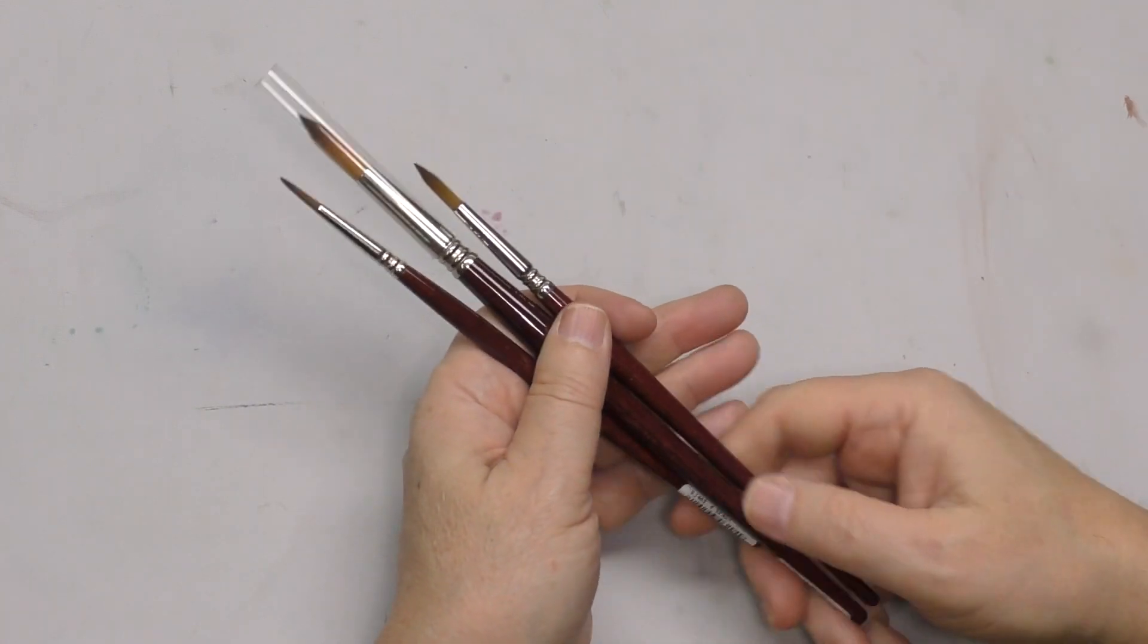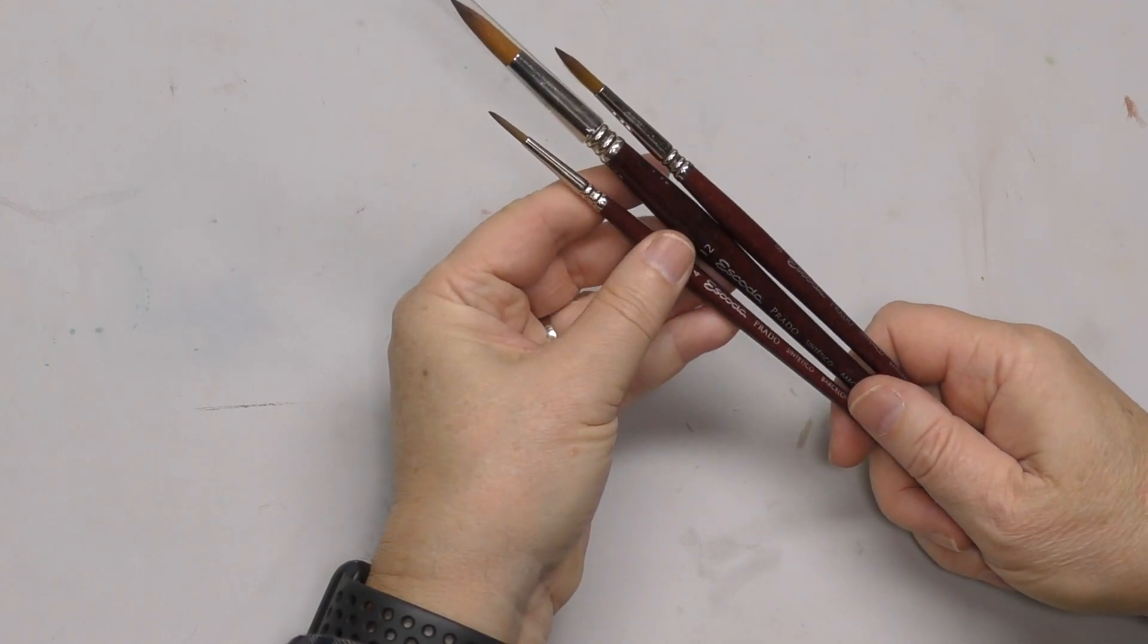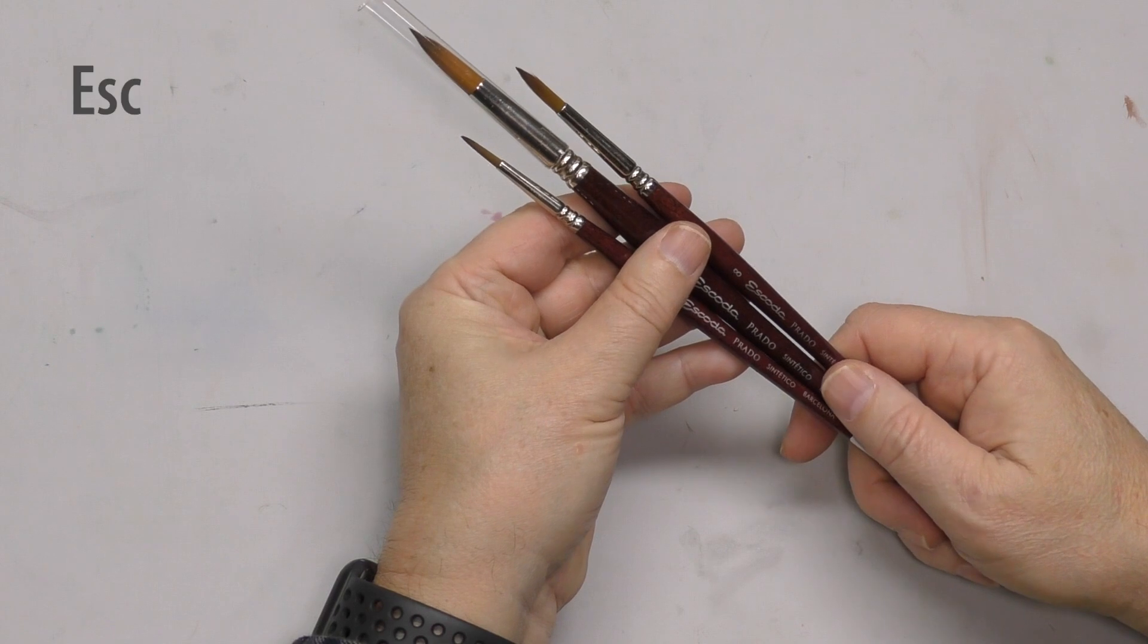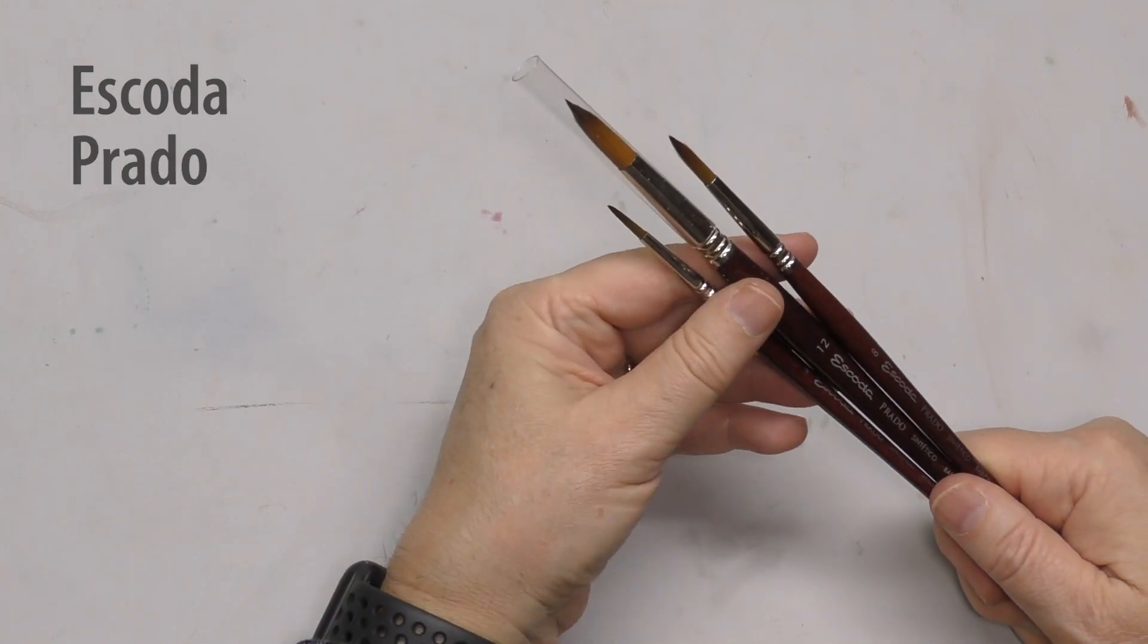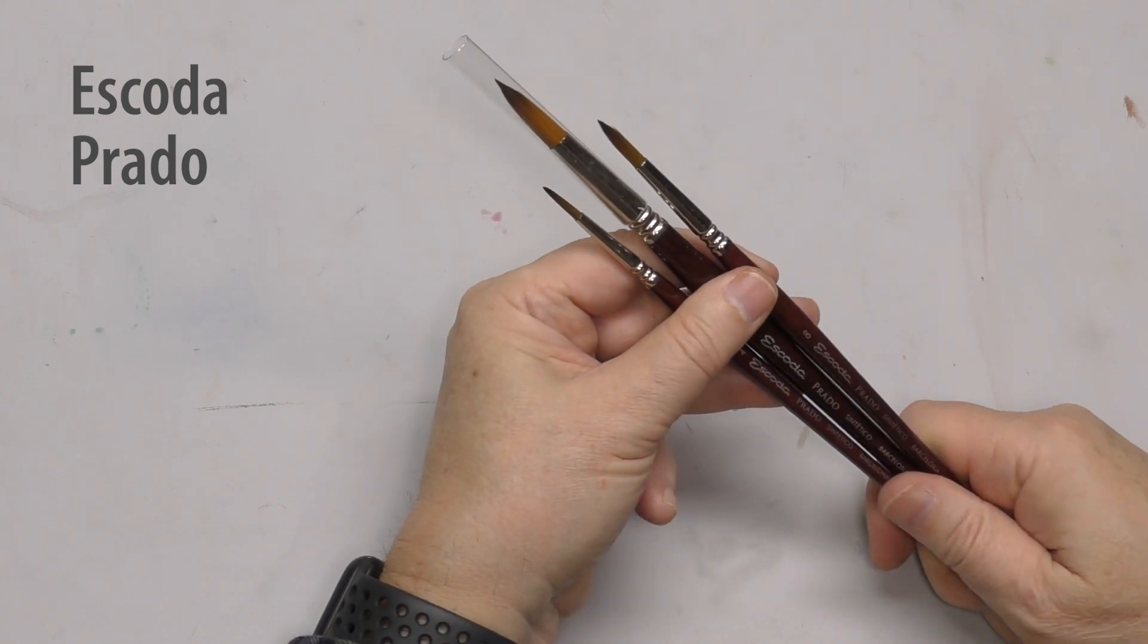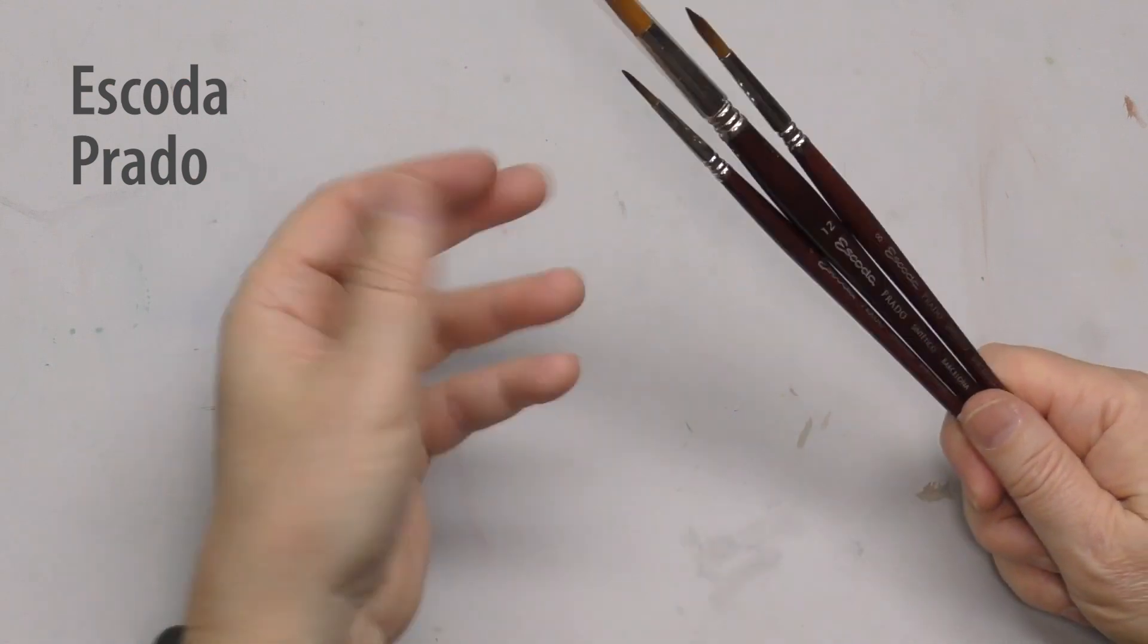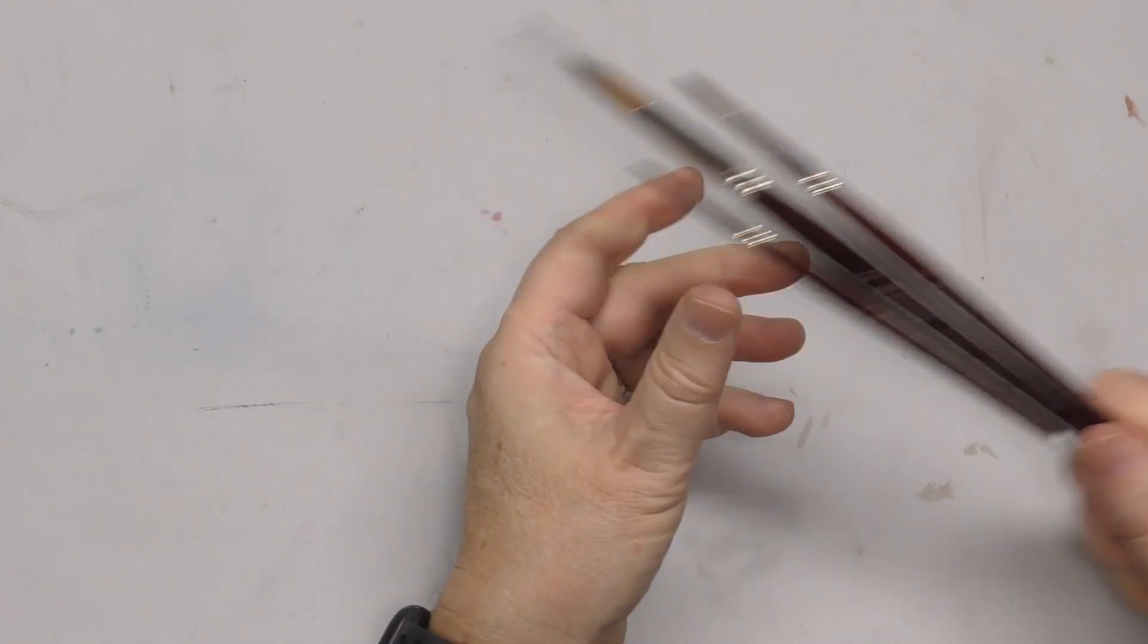Another brush that falls into the faux Kolinsky category that I think is a great brush. I just don't have a lot of them, but I've enjoyed it every time I've used it, is the Escoda Prado. Escoda makes a really great brush. I only have a few rounds. Got a decent point. So if you're looking for a good synthetic that's a Kolinsky imitator, Escoda Prado is one you could try. Highly recommend it.